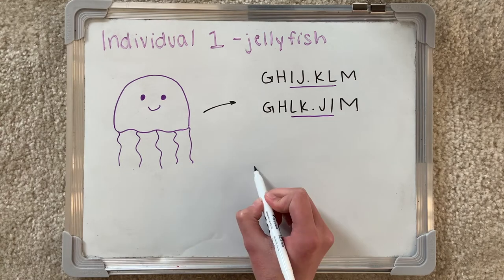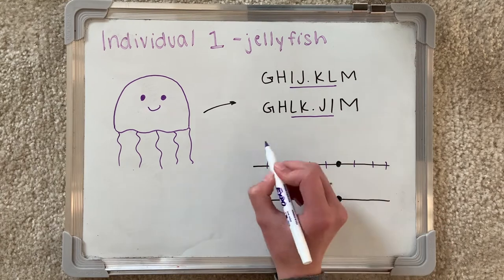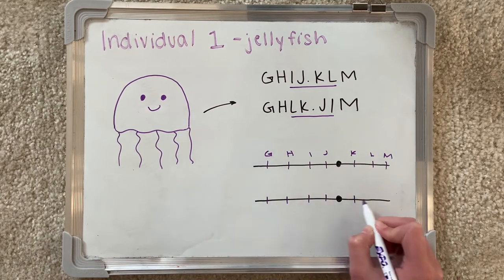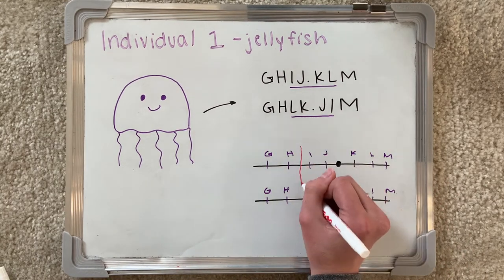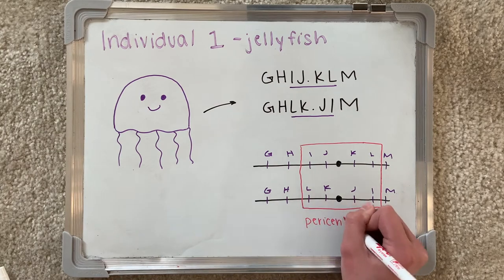The segments I have underlined are flipped versions of each other. One reads IJKL, while the other is LKJI. This is an example of an inversion mutation, and since the inverted segment contains the centromere, it is a pericentric inversion.